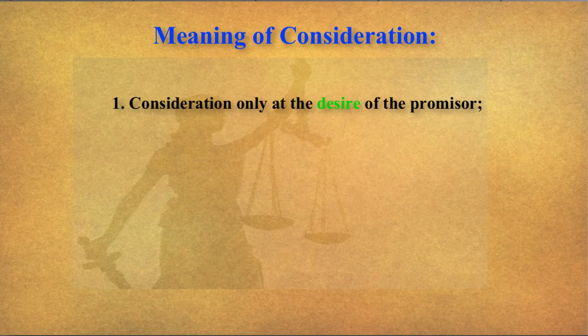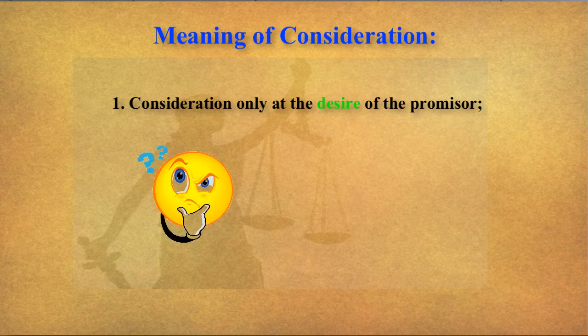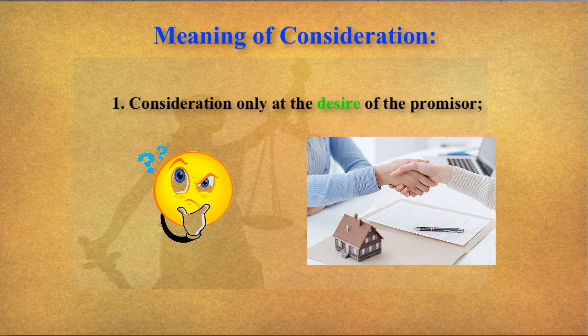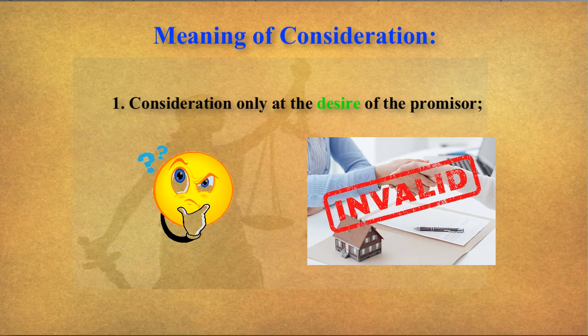To understand this definition in more detail, the first clause is: consideration only at the desire of the promisor. This means you contracted with someone to buy his property, and the amount fixed by the seller — if you pay that amount, only then it is considered valid. You can negotiate, but whatever amount is decided, if you pay less than that, then it is invalid or void.